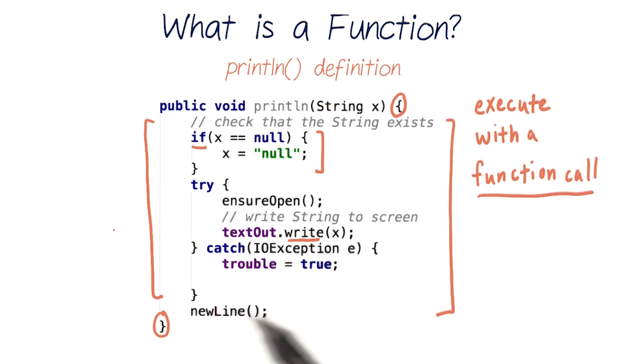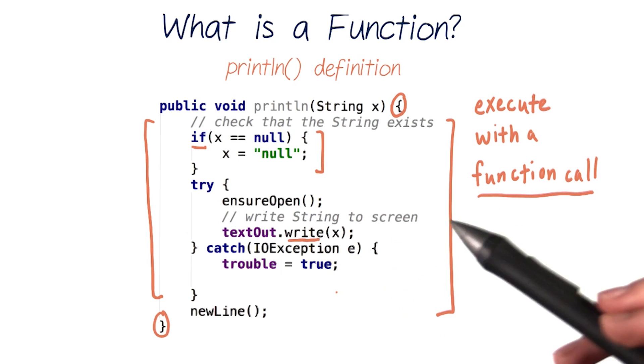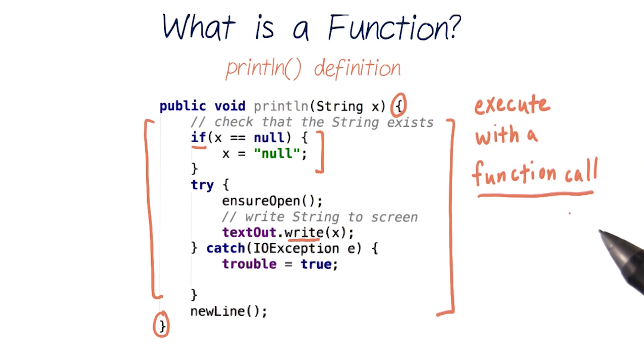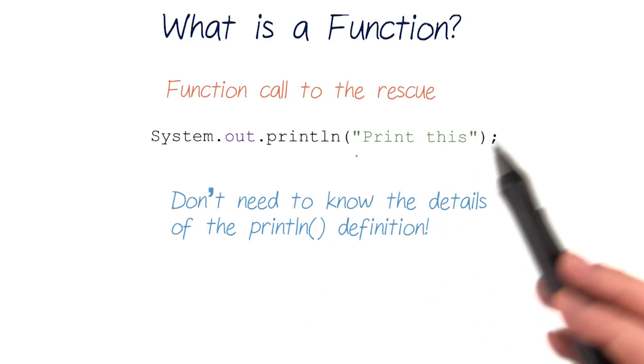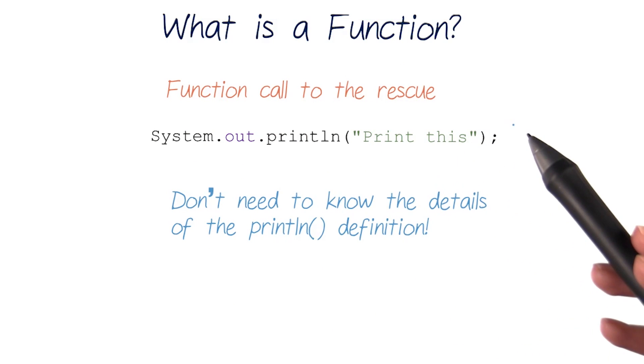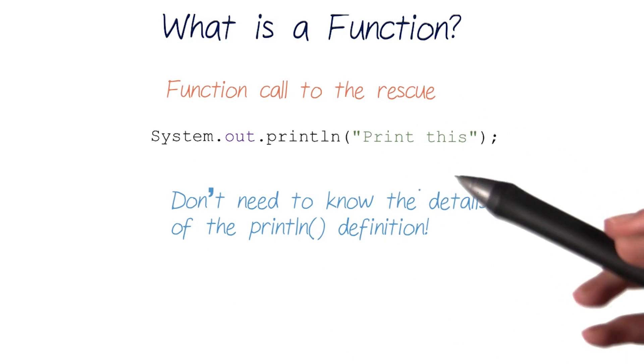Luckily, since println is a function, we're able to use all this code as many times as we want, just by referring to the function name with a function call. So function calls like this let us print stuff out to our screen, and we don't need to know the specifics of the code being executed.